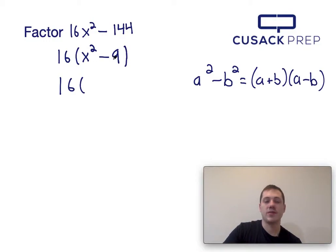Now x squared minus 9, those are both perfect squares, so we can factor them using the difference of squares equation, which I presented here.